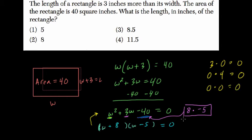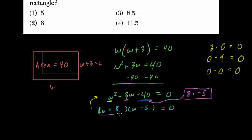So here, let's assume they're both 0 and see what happens. So first, w plus 8, let's assume that equals 0. If we solve for w, w equals negative 8. We subtract 8 from both sides. So here we're not going to use this one because we can't have a length that's negative.